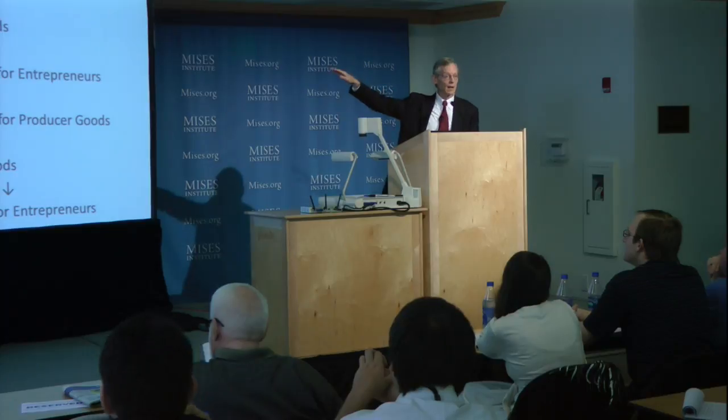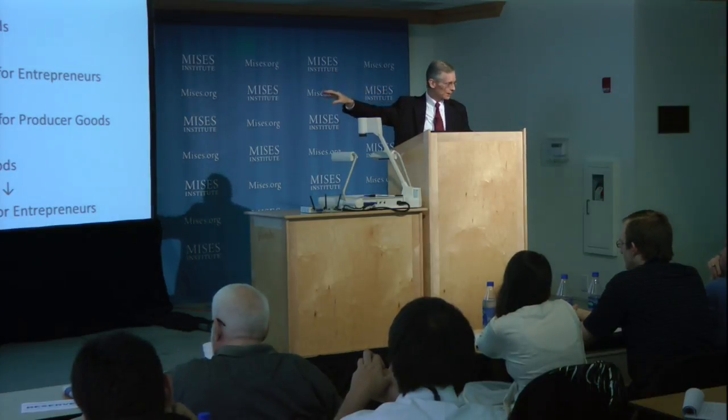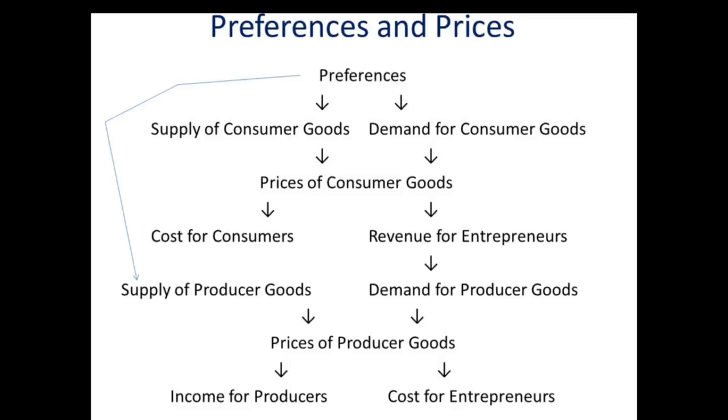Appraisement refers to the specialized entrepreneurs in the market who do the same kind of thing — they make economizing decisions by anticipating the monetary results of actions they take in the division of labor, where they bring all of us into concerted effort. So what we want to talk about in the rest of the time — the second part of our discussion about market prices — is just the first three lines of our schematic: the prices of consumer goods. We'll leave to other lectures the rest about production and the prices of producer goods.